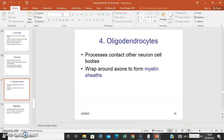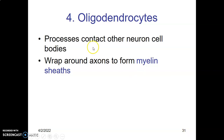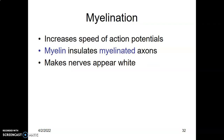The oligodendrocytes are glial cells in the central nervous system that wrap their cell membrane around axons to form myelin in the CNS. In the peripheral nervous system, myelination is carried out by the Schwann cells. When these glial cells wrap their cell membrane around the axons, they myelinate and insulate them. This myelin makes the axons appear white, and these myelinated axons in the CNS eventually form the white matter.